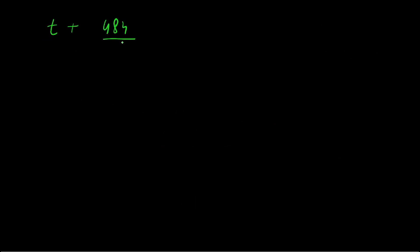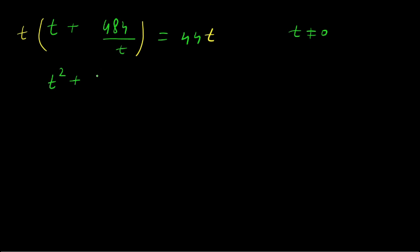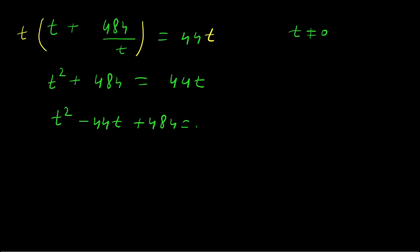Now we have t + 484/t = 44. If we multiply both sides by t (where t ≠ 0), then in the left hand side we get t² + 484, and this equals 44t. Taking all terms to one side gives t² − 44t + 484 = 0.